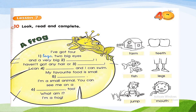Exercise 10: look, read and complete. We have a frog — okay, this is a frog. Let's complete this dialogue. 'I have got four legs, two big eyes, and a very big...' — a very big mouth. Excellent.